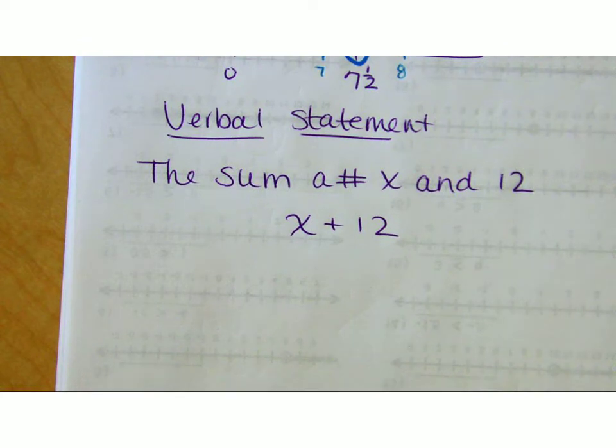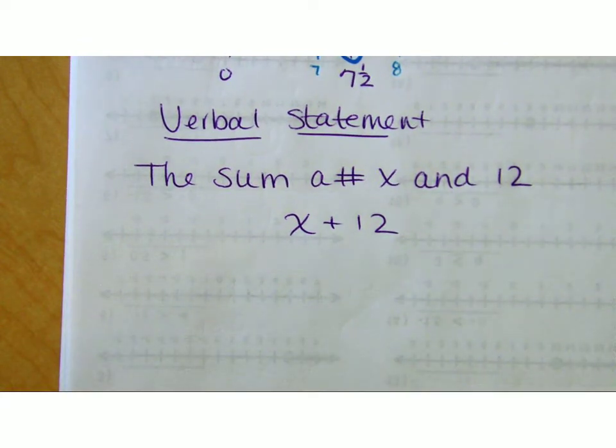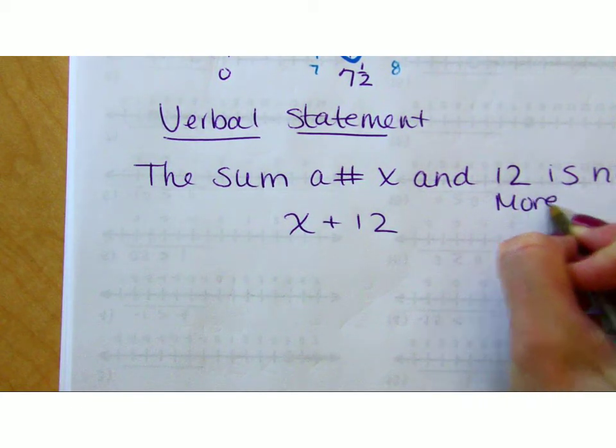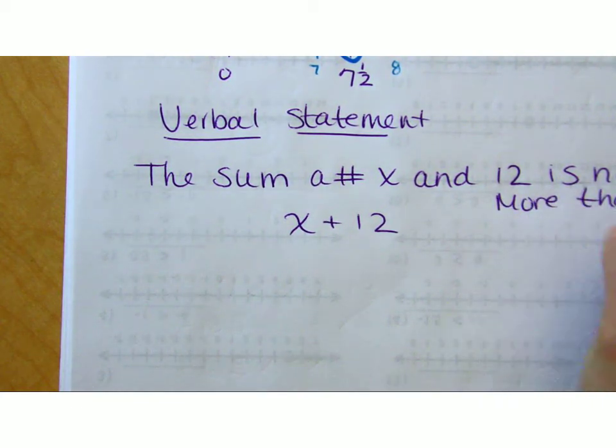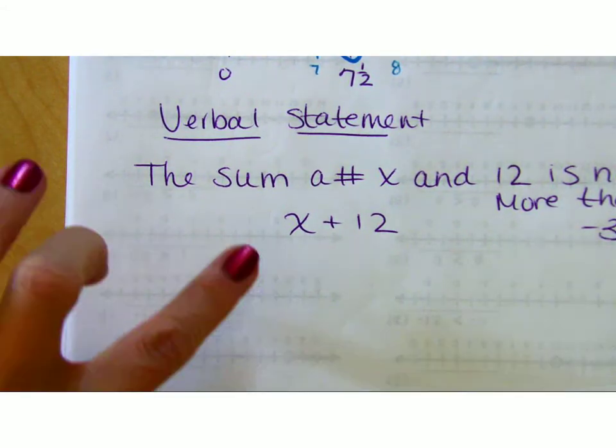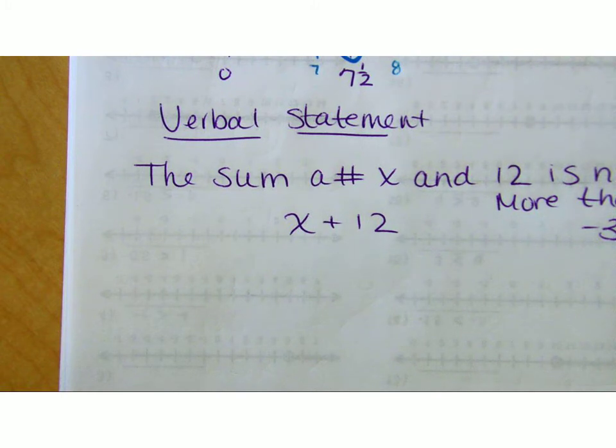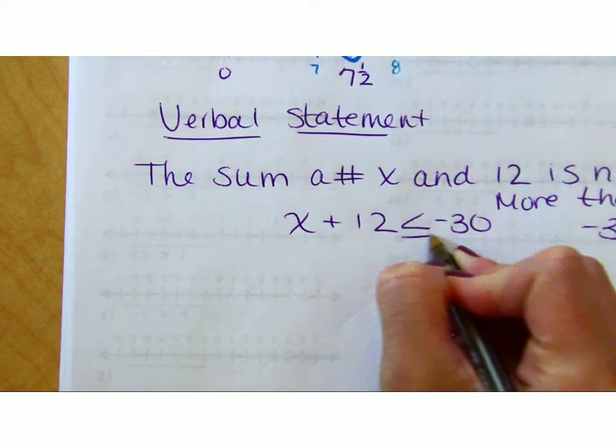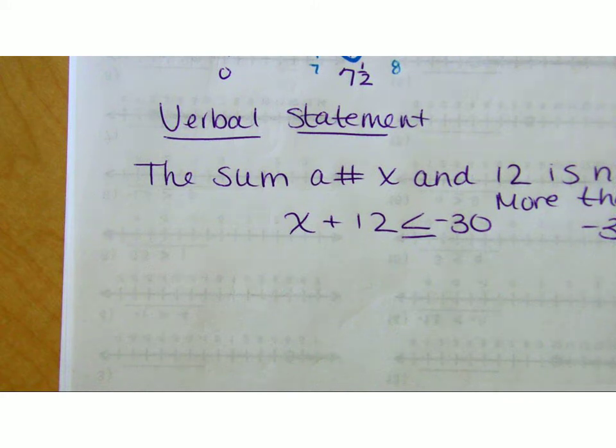That was test 1. Test 2 said, take that and now I'm going to add this: is no more than negative 30. Now it's standard 2. So a sum of a number x and 12, what symbol means it can't be more than that? If it can't be more than that, it has to be less than that. Can it be that? Yes, it just can't be more than that. So we're using that symbol.